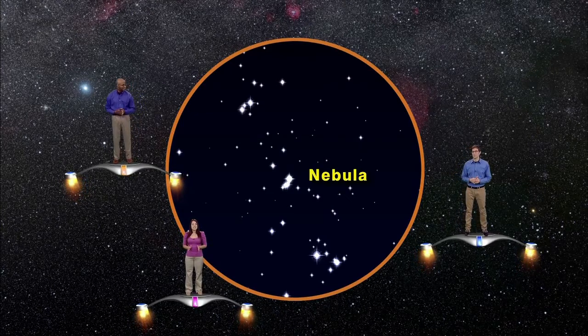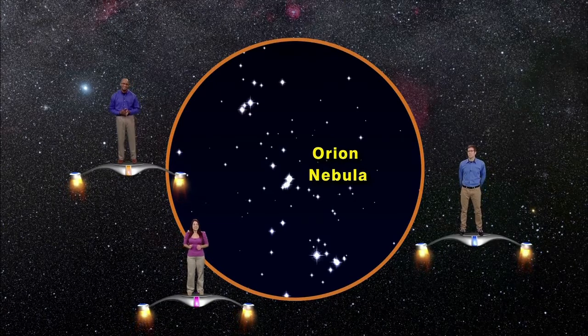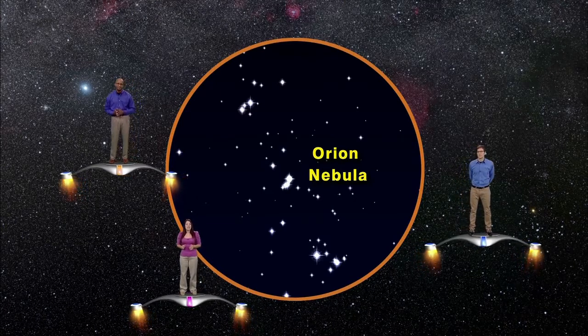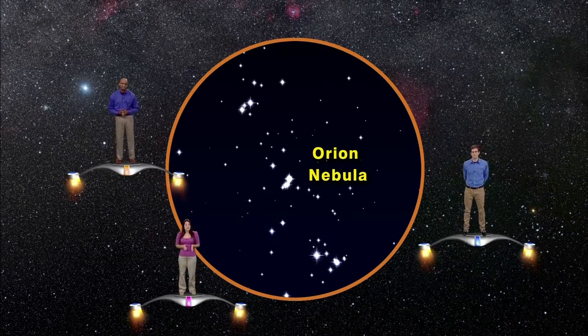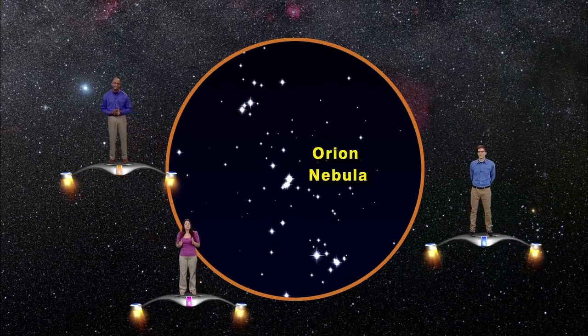A nebula is a cosmic cloud of gas and dust. The great nebula of Orion is actually a stellar recycling center. Some nebulae are what's left behind after a star dies. Within this nebula, brand new stars have been, and are still being, born.